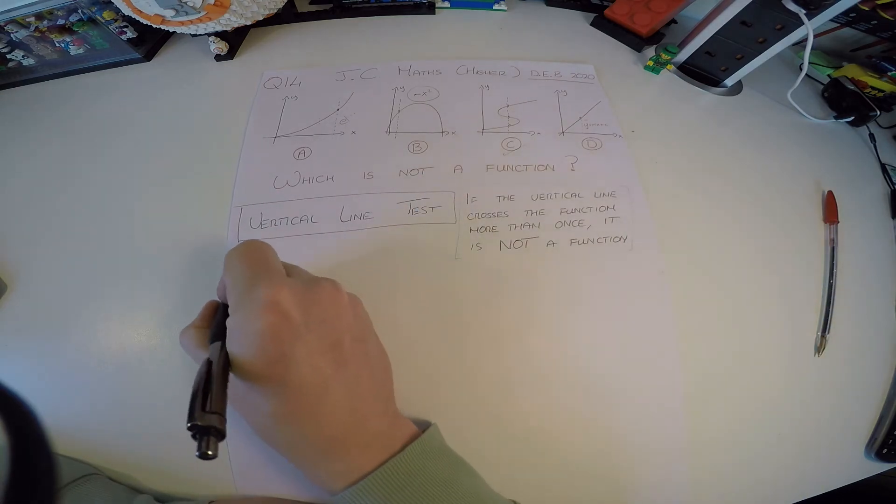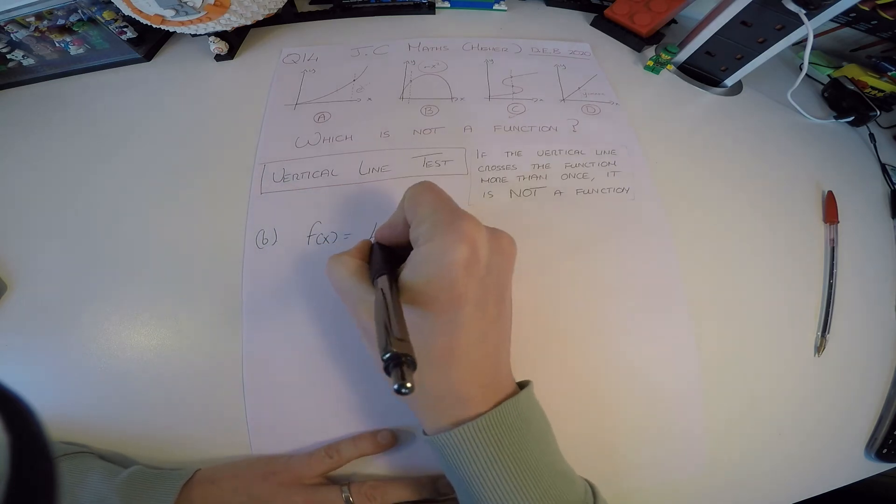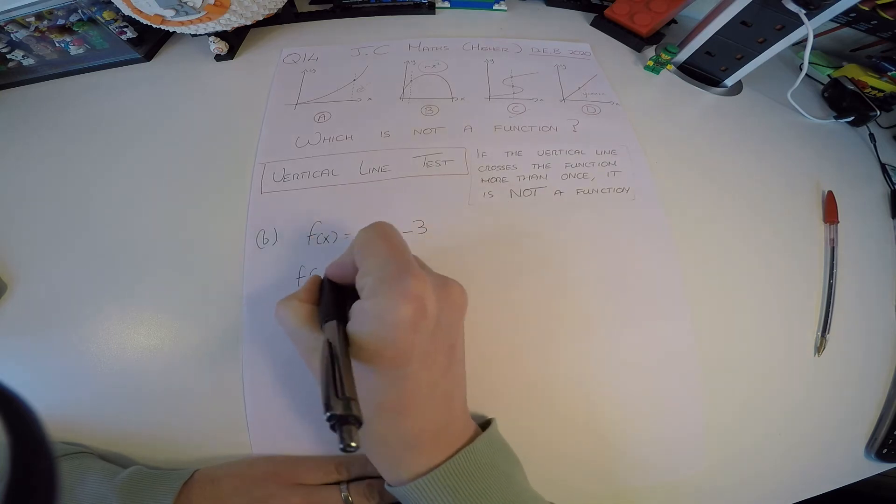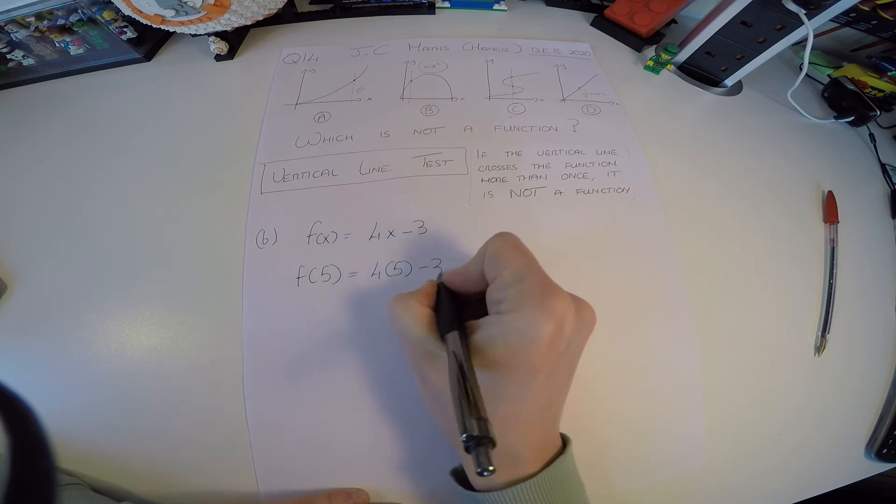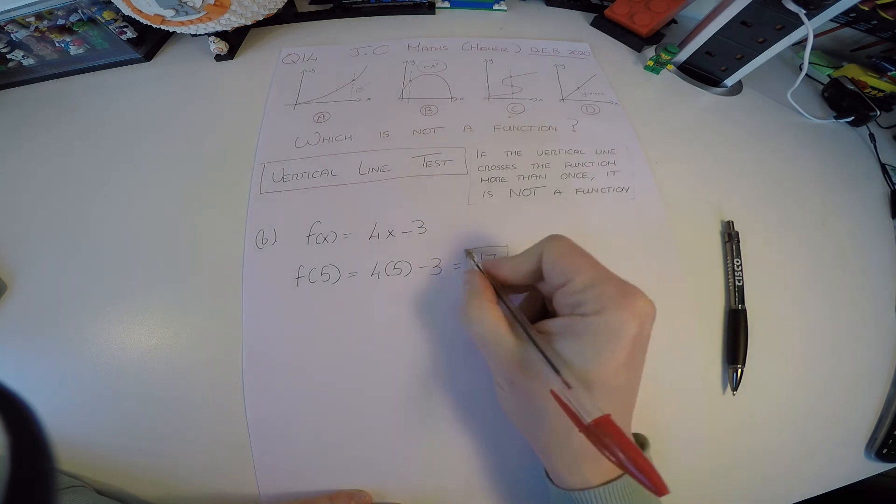And then part B gives us this. It says a function is defined as f of x is equal to 4x minus 3. So the first question is find f of 5. f of 5 is simply 4 times 5 minus 3, which is 17. So that's that one. Nice and easy.